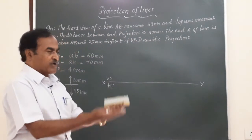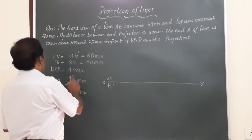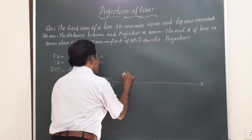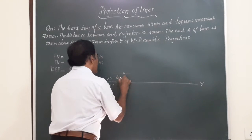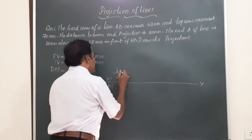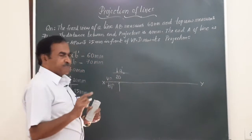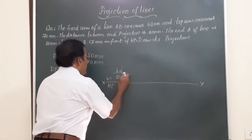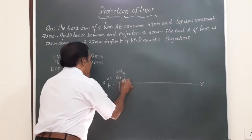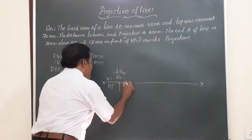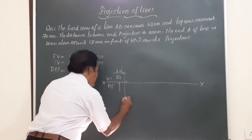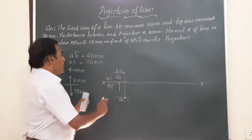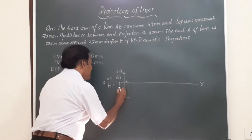So, any distance above HP is marked above XY. He says end A is 20 mm above HP, so I am going to mark a point at a distance of 20 mm above the XY line. I call this point A'. A' represents the front view of the end A. Similarly, on the same line, you have a — the top view of that point. Draw a vertical line perpendicular through this and this point is a. So small a is the top view of the end A. This I will show as 25 mm.